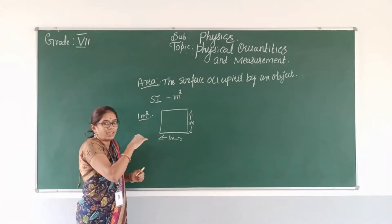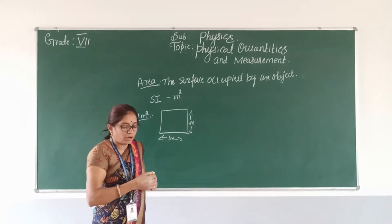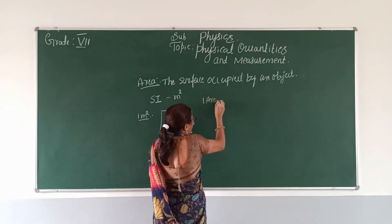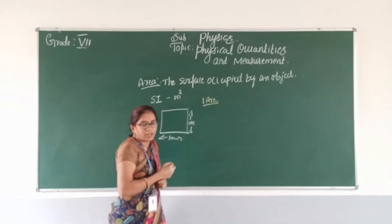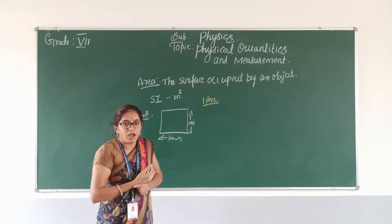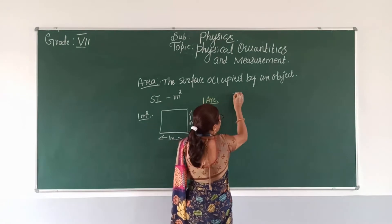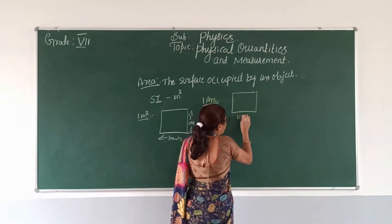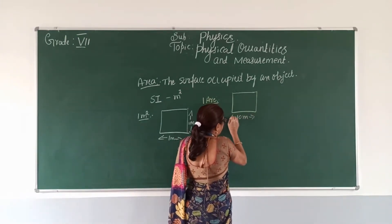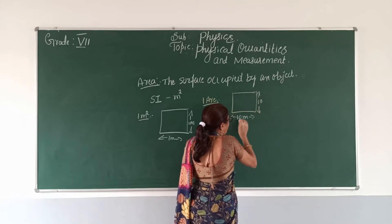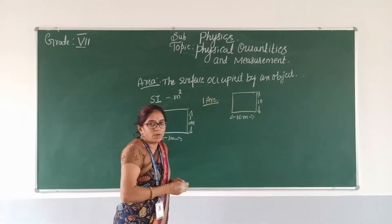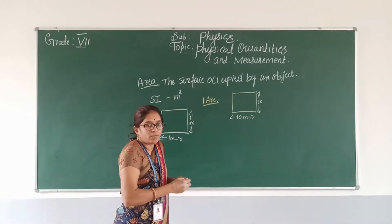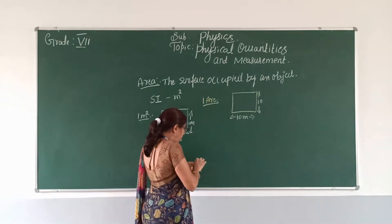So we are going to discuss the area which is more than 1 meter square. The first unit we are going to discuss is 1M. How we can define 1M: 1M is the area of a square whose each side is equal to 10 meters. Length is 10 meters, breadth is also 10 meters. So if the area is once again more than 1M, then we can move to the hectare.